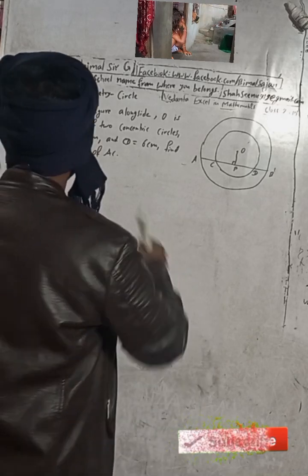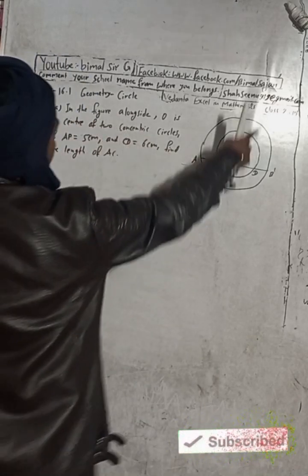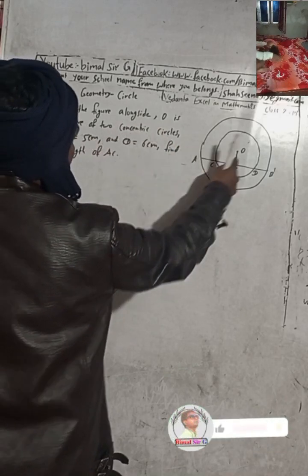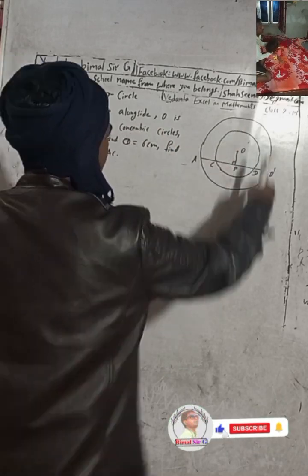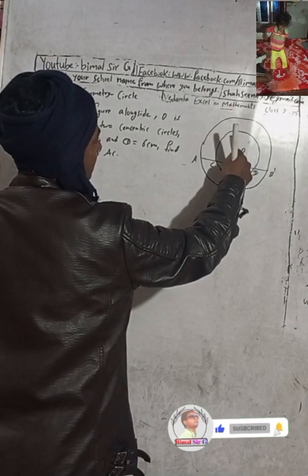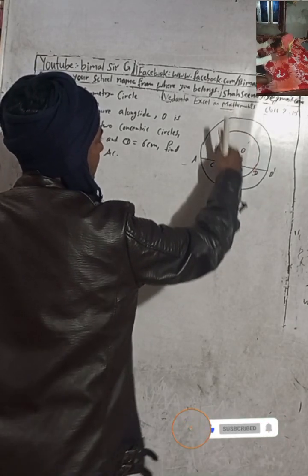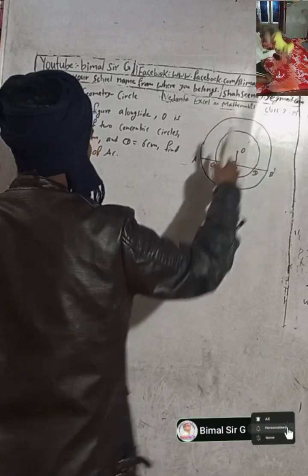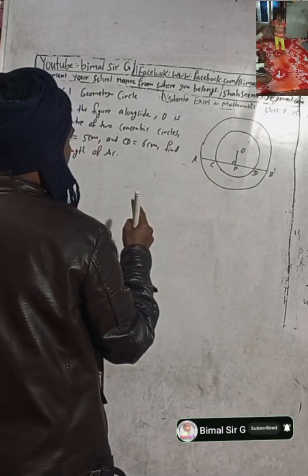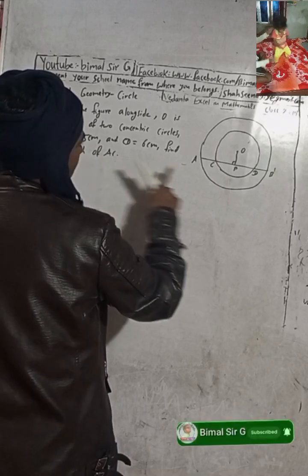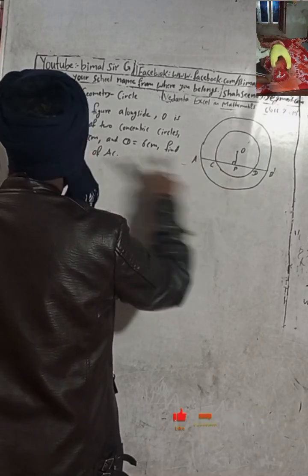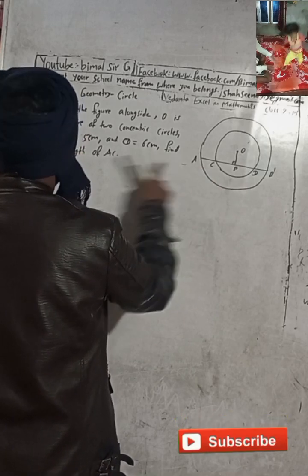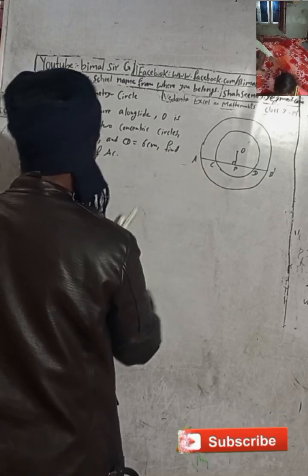In the figure alongside, O is the center of two concentric circles. Concentric means same center — the same center for both the small and the big circle. If AP is equal to 5 cm and CD is equal to 6 cm, find the length of AC.